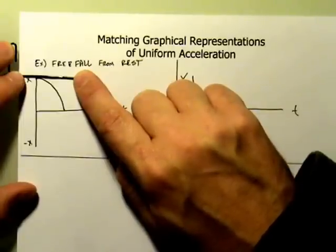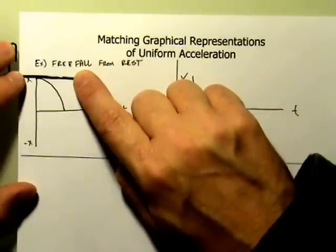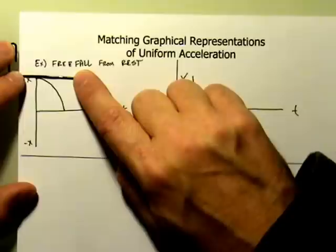Flat with no slope. Slope is zero. Velocity is zero at the beginning of the motion.